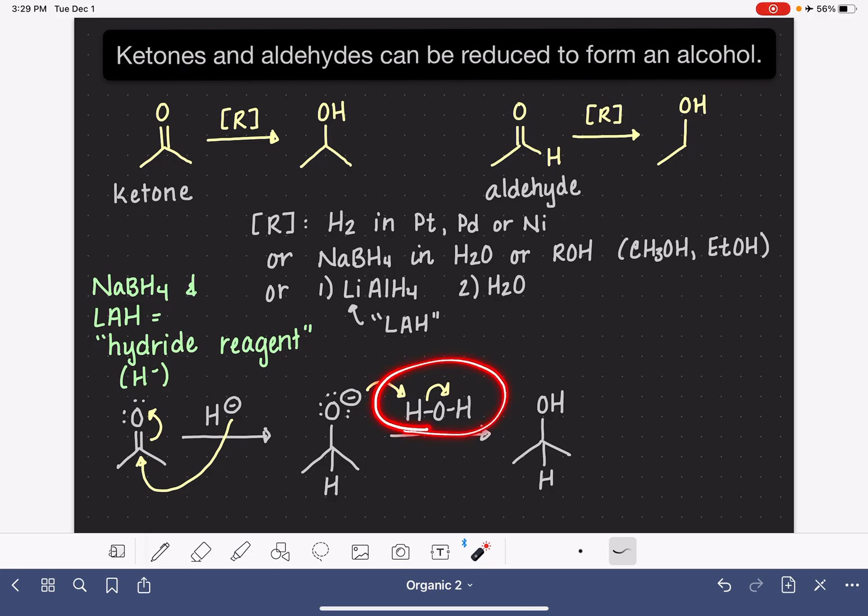If we were going to be using alcohol here instead of water, you really wouldn't change anything at all. So, for example, if we were using methanol, the only thing that would be different is that this would be a CH3 out here instead of another hydrogen. Or if this was an ethanol, this would be an ethyl group instead of another hydrogen. But other than that, the mechanism is the same.